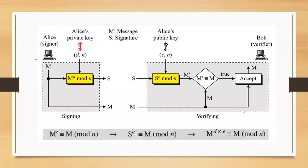The RSA digital signature scheme may be asked as a short note or a 10-mark question in exams. The key generation is the same as the RSA cryptosystem; only the function parameters change. The main difference is: RSA cryptosystem uses the receiver's public and private keys, while RSA digital signature uses the sender's private key for signing and the sender's public key for verification.